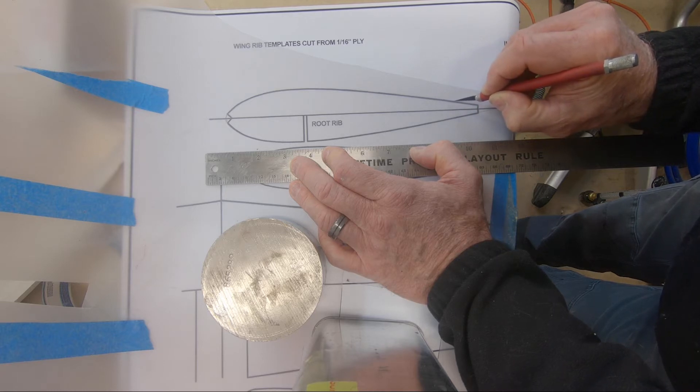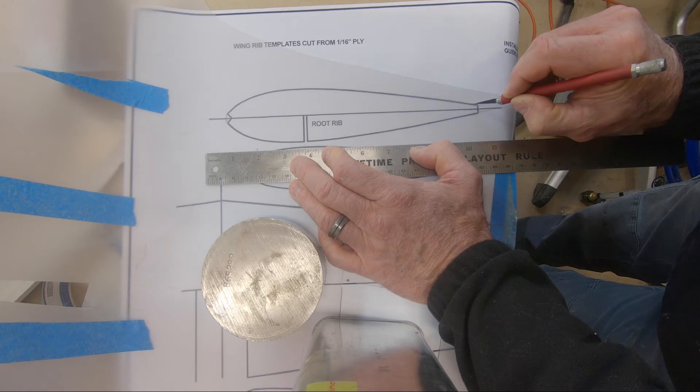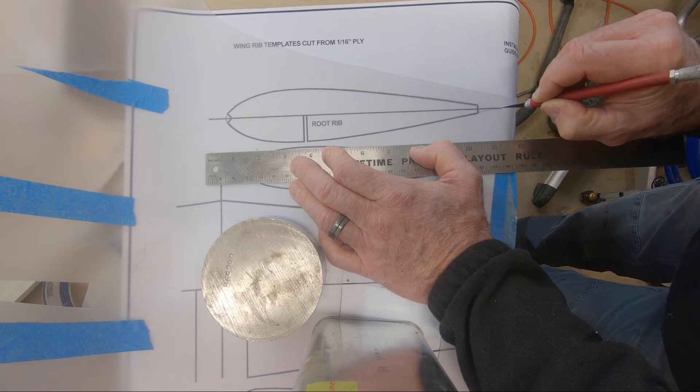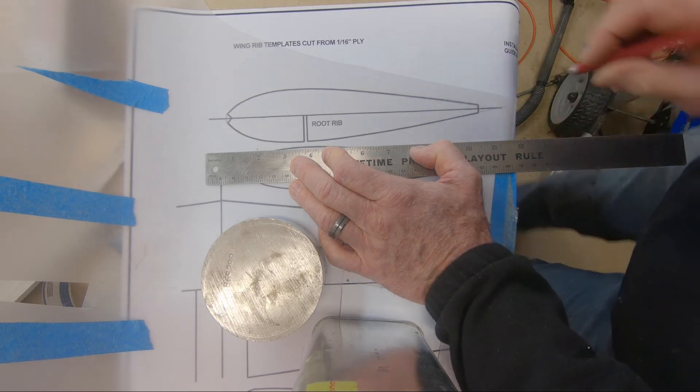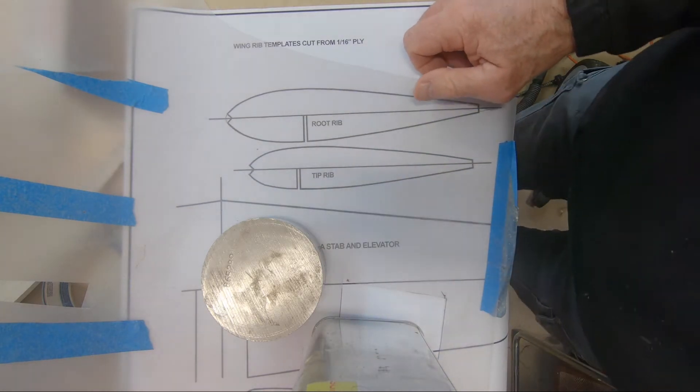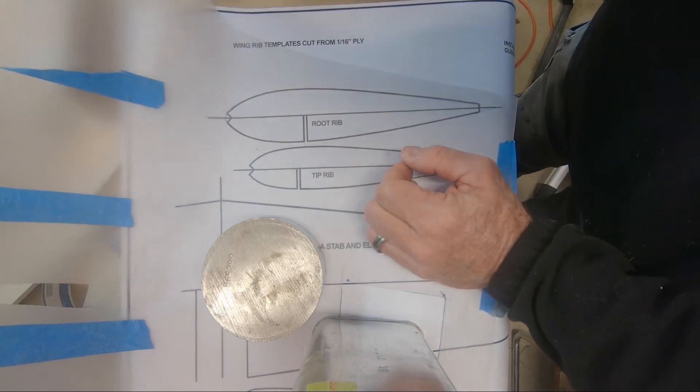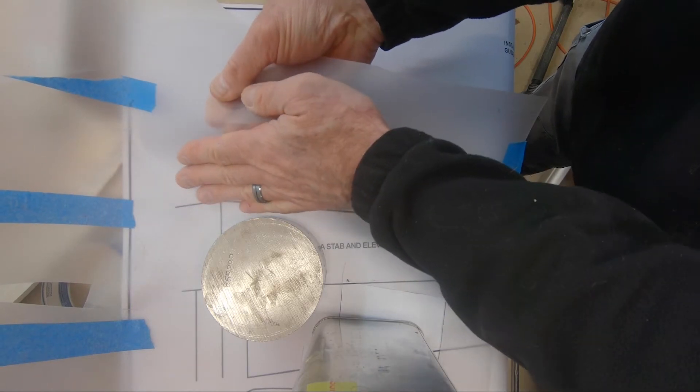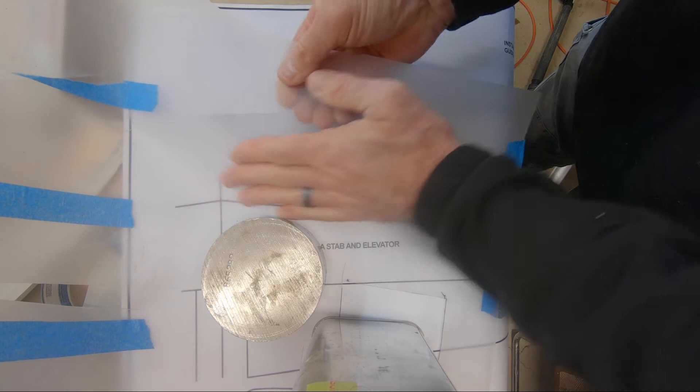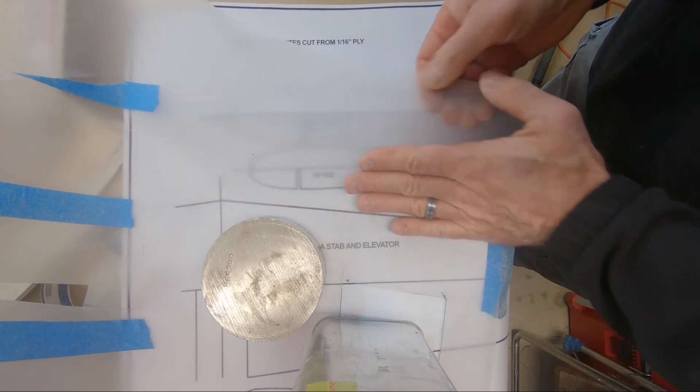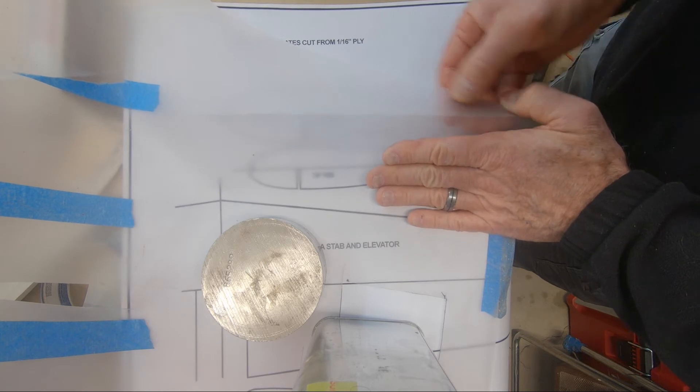As you can see, I'm just inching along here, trying to get accuracy. Now, with C-Temp, it's a material where if you bend it on the score, it'll actually break.